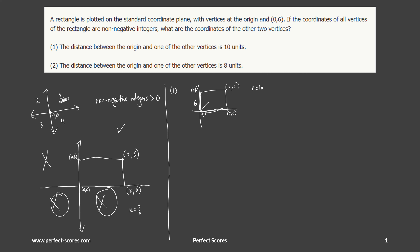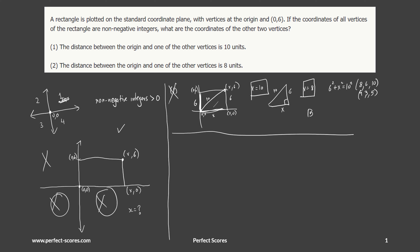But what if the distance to (x, 6) is 10? That forms a right triangle where the hypotenuse is 10 and one leg is 6. Using the Pythagorean theorem: 6² + x² = 10², giving x = 8. So 6-8-10 — a well-known Pythagorean triple derived from 3-4-5. Since x could be 10 or 8, Statement 1 is insufficient. The answer must be B, C, or E.